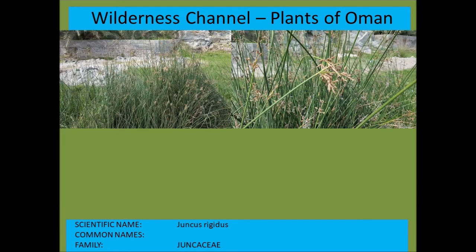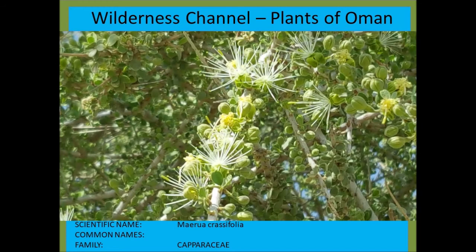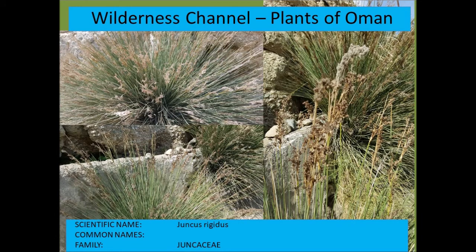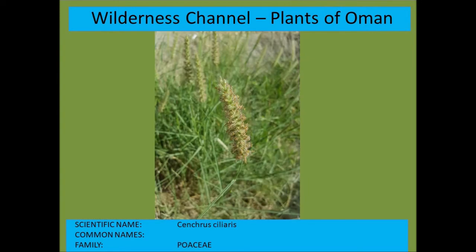Juncus rigidus again. Maerua crassifolia — a different specimen. Juncus rigidus again. Cenchrus ciliaris — mentioned previously as a common grass species worldwide.